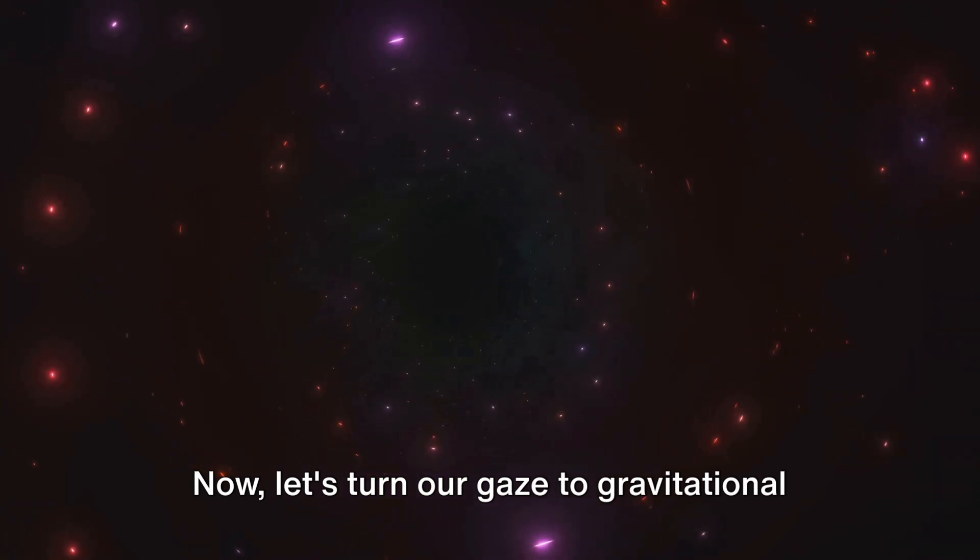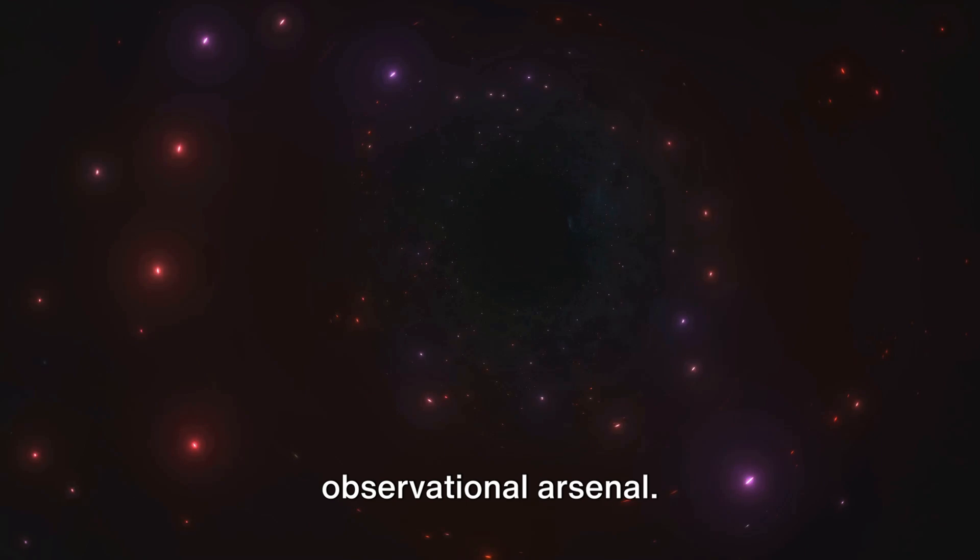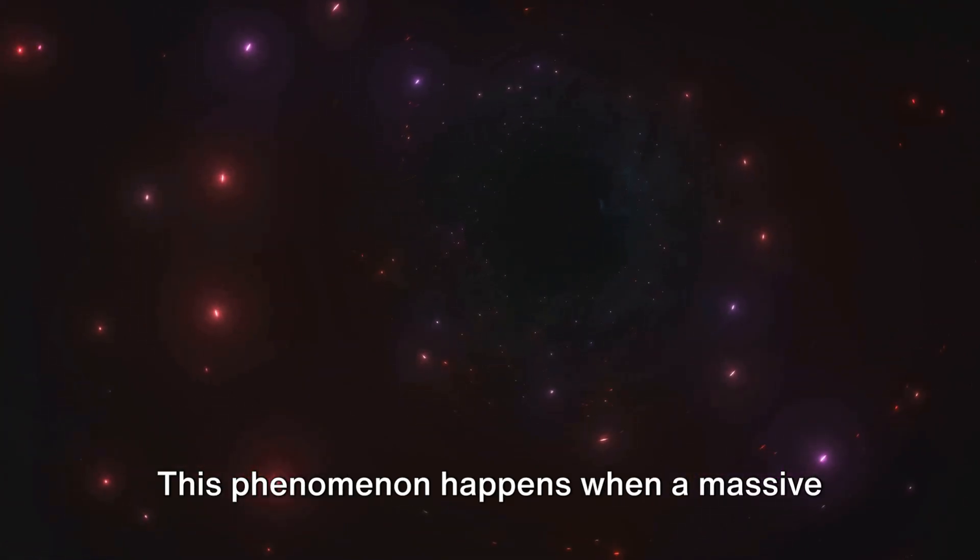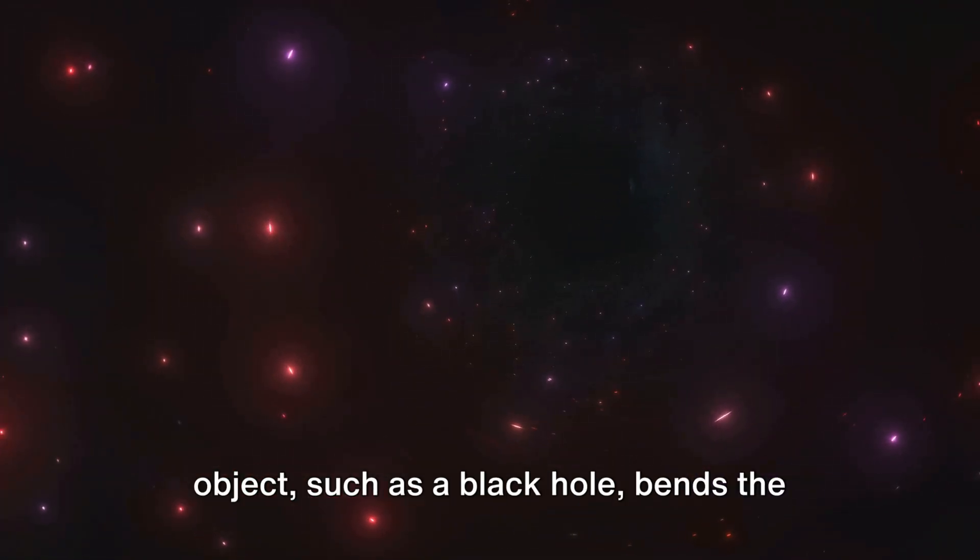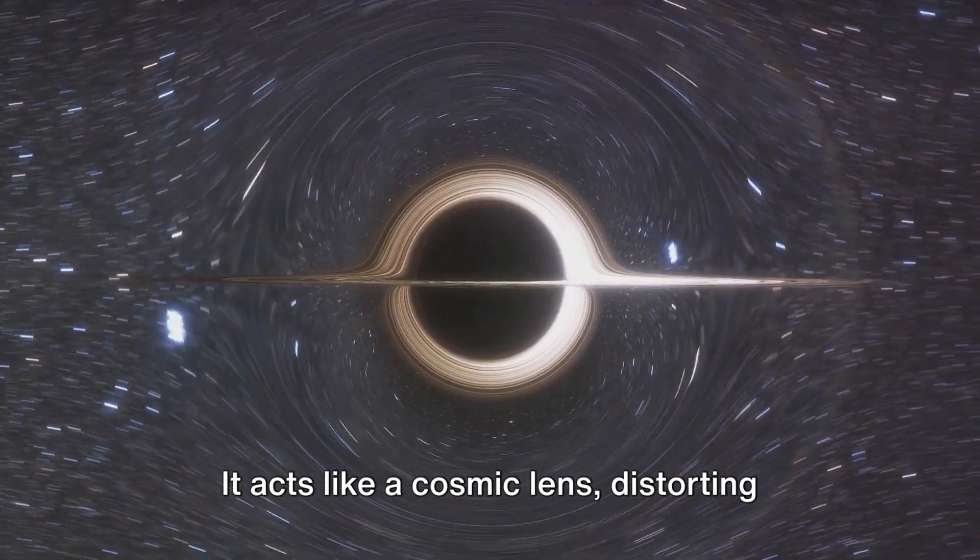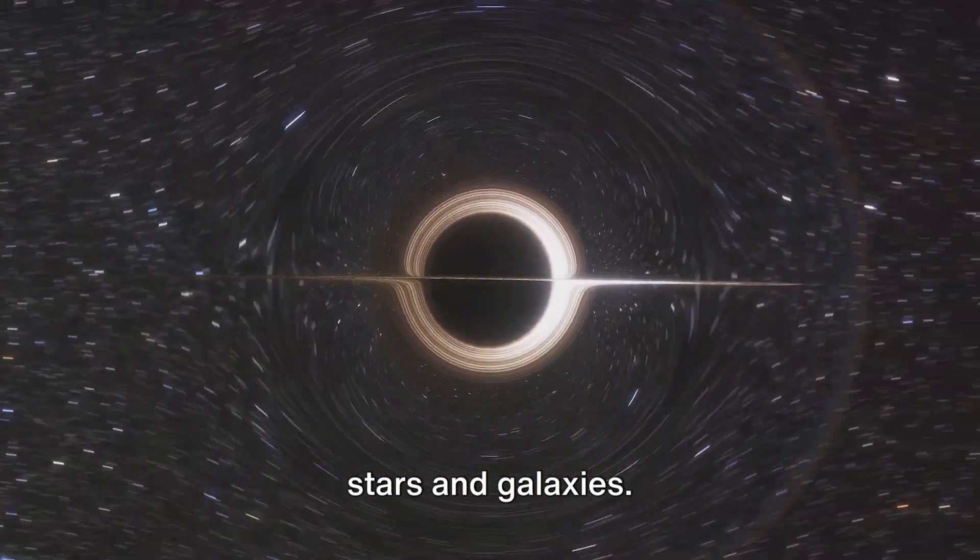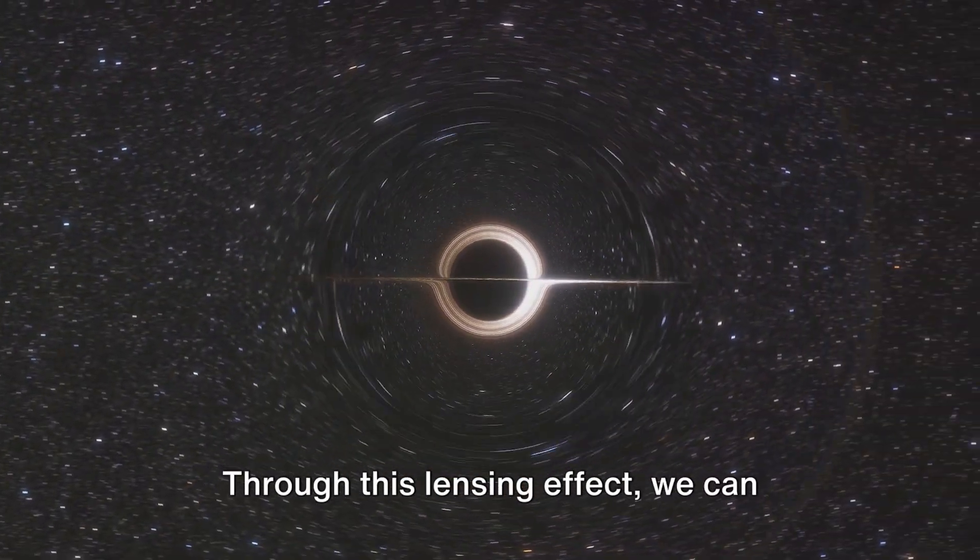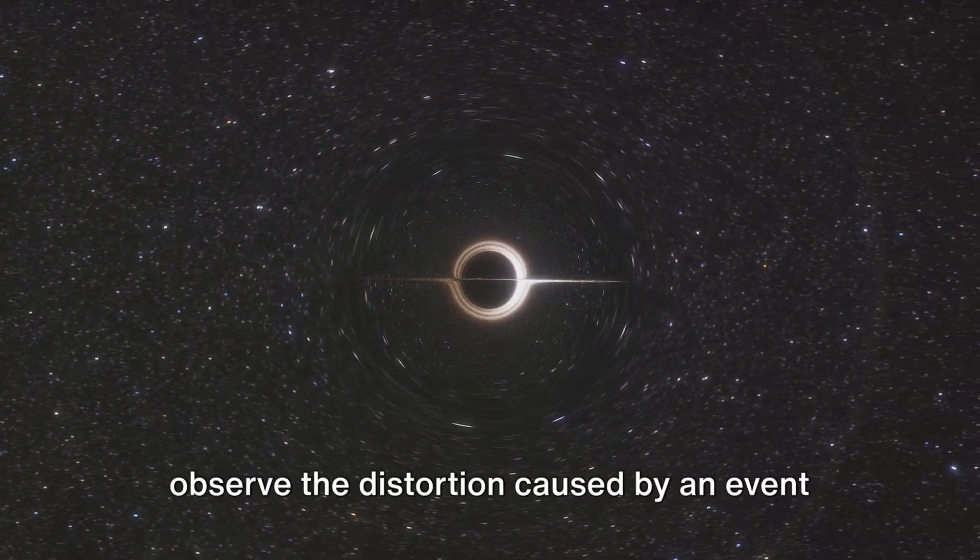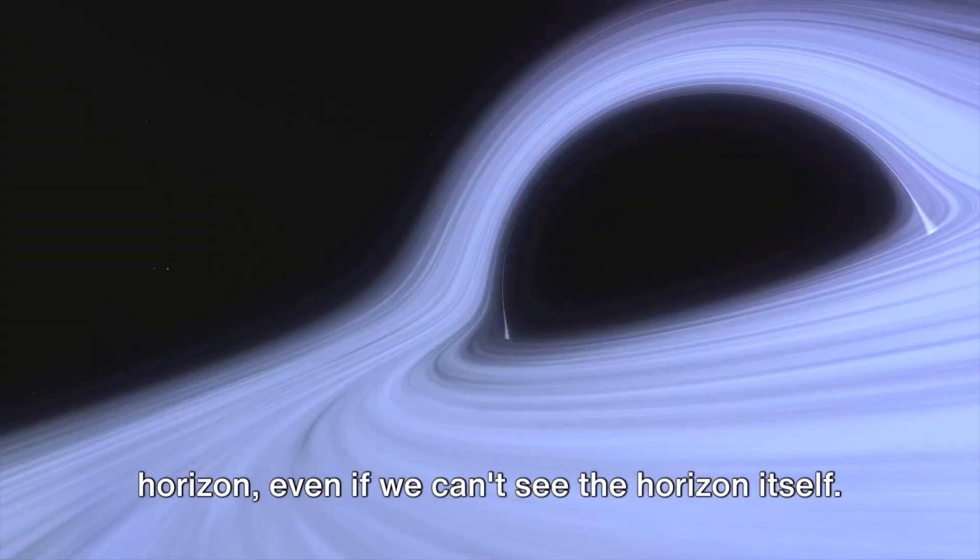Now, let's turn our gaze to gravitational lensing, another fascinating tool in our observational arsenal. This phenomenon happens when a massive object, such as a black hole, bends the fabric of space-time. It acts like a cosmic lens, distorting and magnifying the light from distant stars and galaxies. Through this lensing effect, we can observe the distortion caused by an event horizon, even if we can't see the horizon itself.